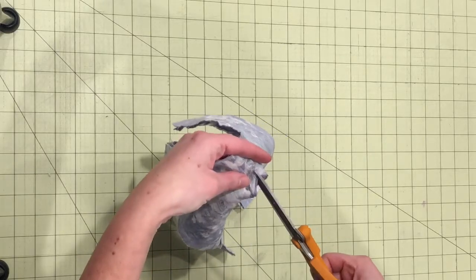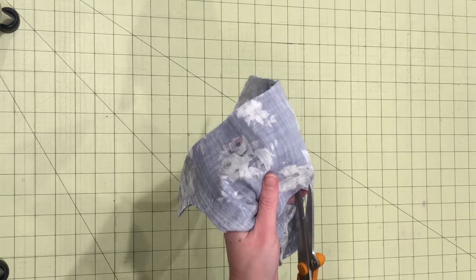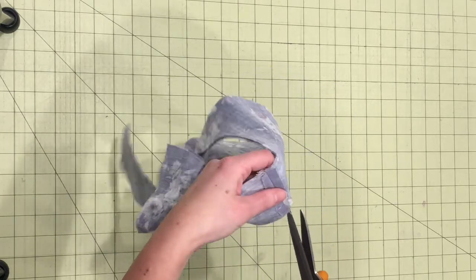Then you're going to clip notches into the points of the V at the front and back neckline and clip a few notches along the slight curve of the neckline up towards the shoulder.